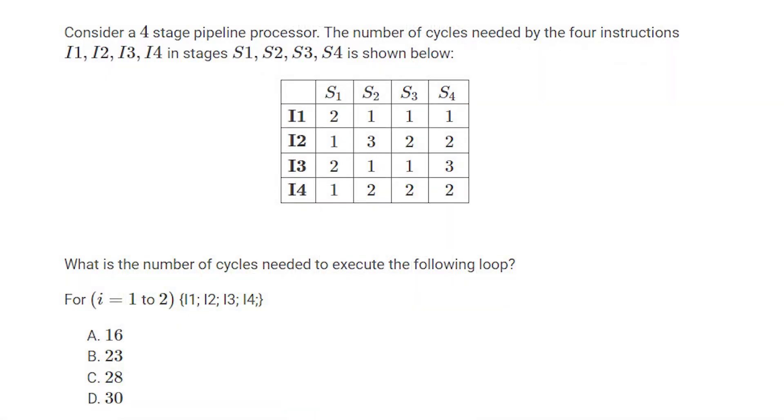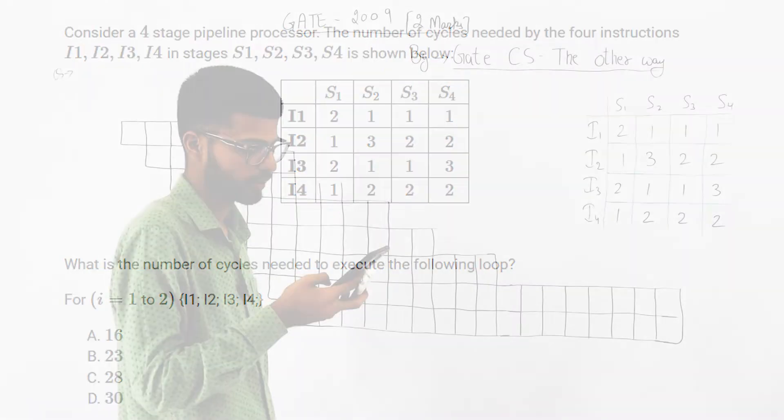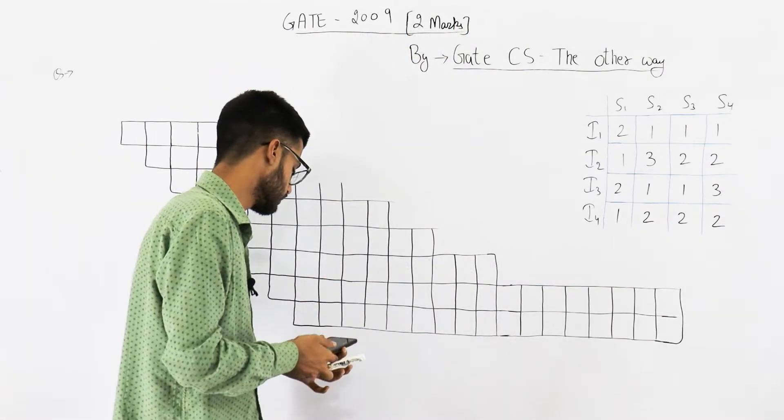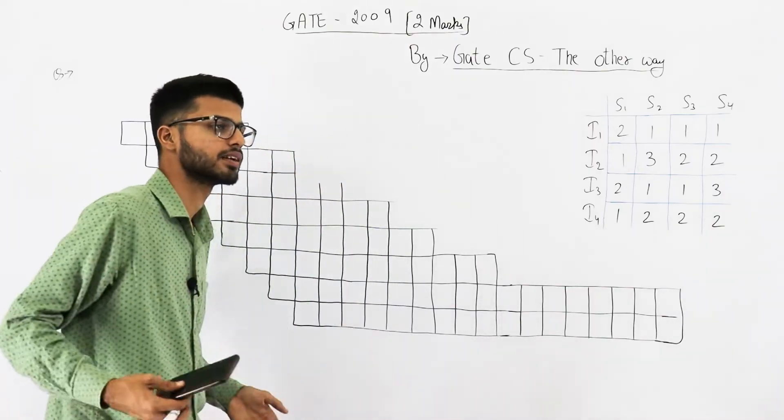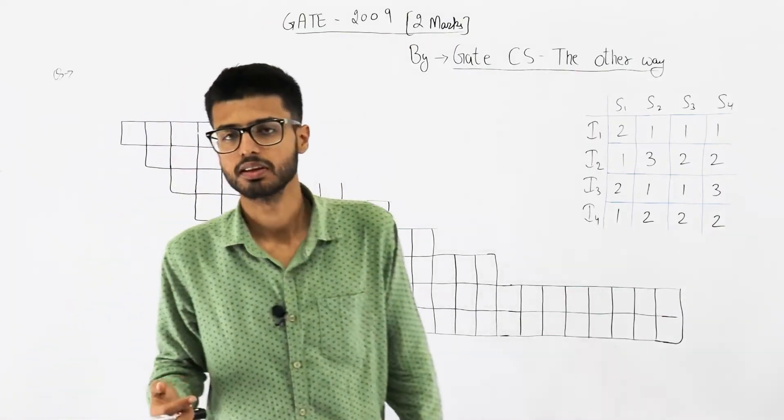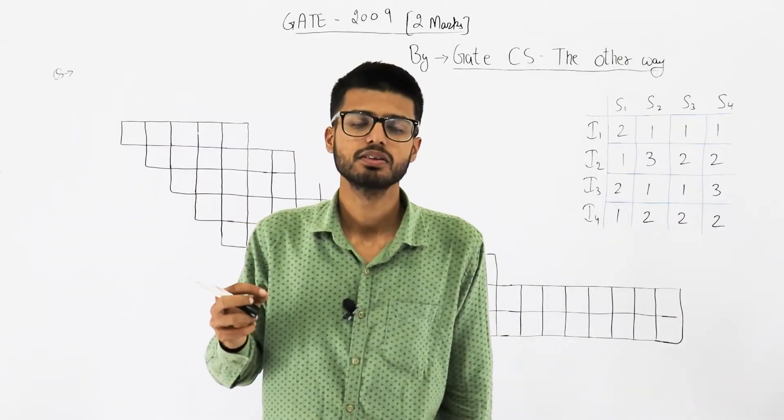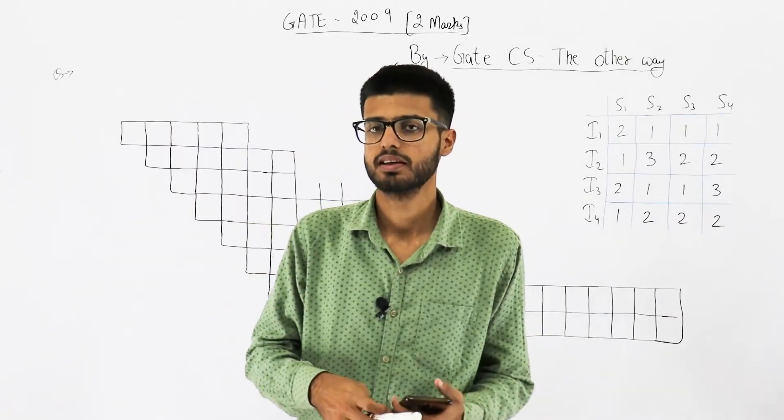Consider a four stage pipeline processor. The number of cycles needed by the four instructions i1, i2, i3, i4 in stages s1, s2, s3, s4 are shown below. What is the number of cycles needed to execute the following loop: for i equals 1 to 2, i1, i2, i3, i4. Just have a look at the statement and the program that is to be executed.